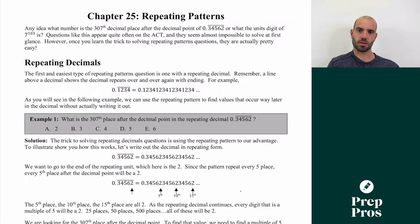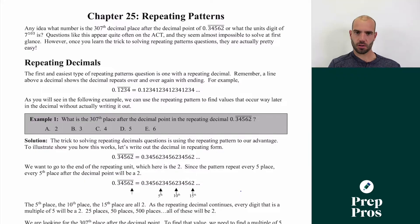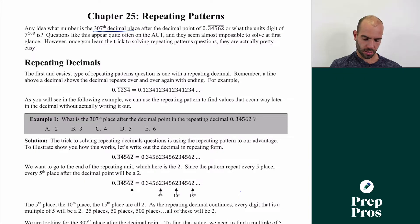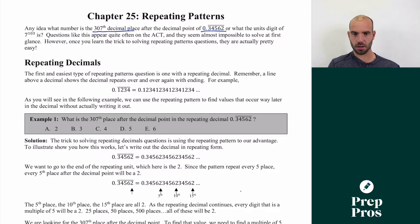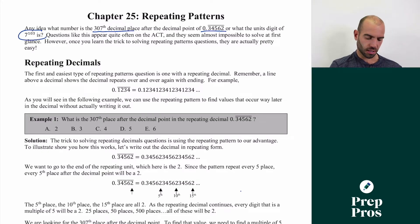I'm going to be using our soon-to-be-released ACT math book to go through this. So first of all, what do I mean when I say repeating pattern questions? You might have seen a question where the test asks what's the 307th decimal place in the repeating decimal 0.3462, or what's the units digit of 7 to the 103rd power — those are both repeating pattern questions.